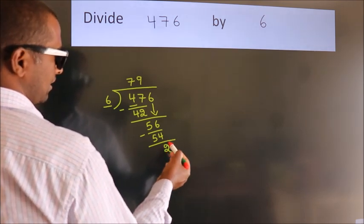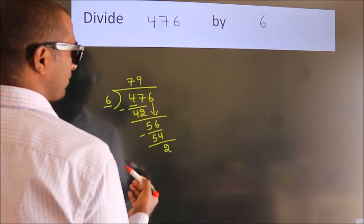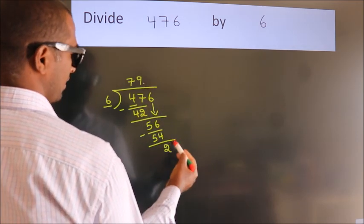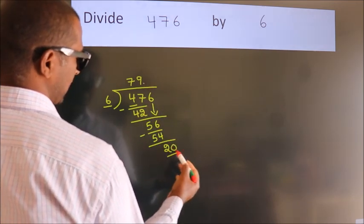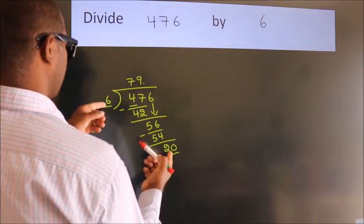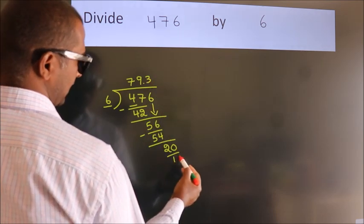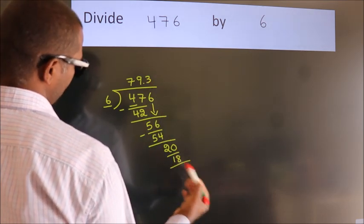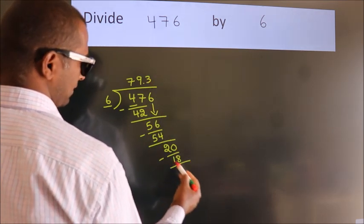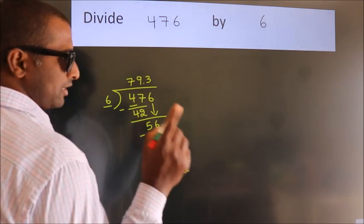After this, no more numbers to bring it down. So what we do is, we put dot, take 0. So 20. A number close to 20 in 6 table is 6 3s 18. Now we subtract. We get 2. Now you observe.